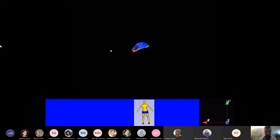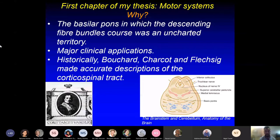In the first chapter of my thesis, I analyzed the motor pathways. The basilar pons constituted an uncharted territory until now and has major clinical applications, particularly for tumors in the basilar pons. Historically, three men — Bouchard, Charcot, and Flesig — made accurate descriptions of the corticospinal tract. Costanzo Varolio, an Italian anatomist and papal physician, was the one who discovered and anatomically described the basilar pons.